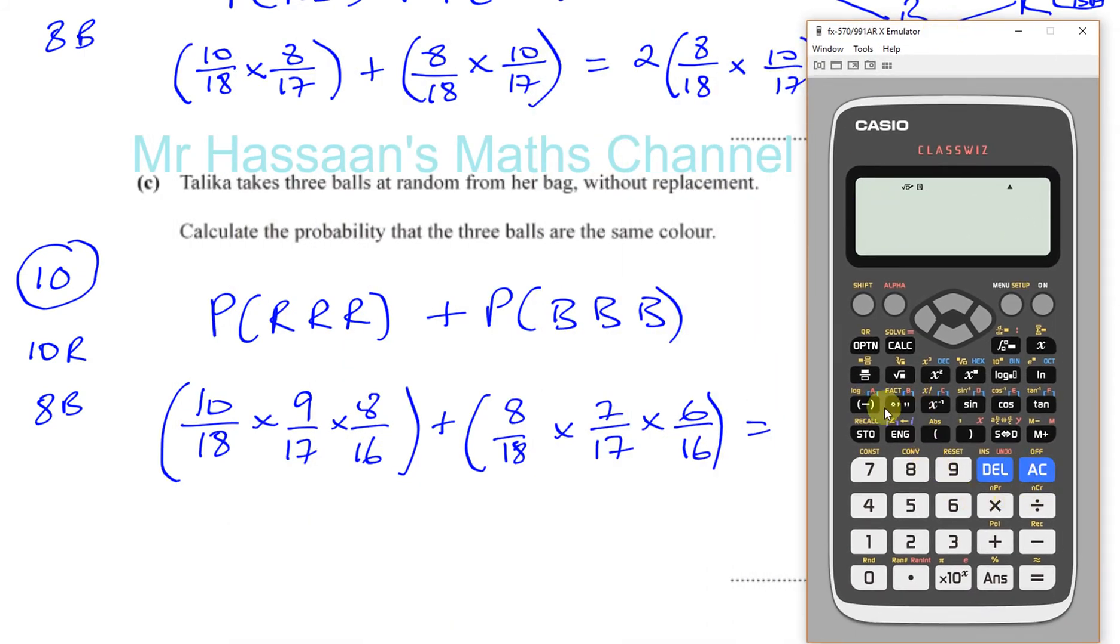So we have here 10 over 18 multiplied by 9 over 17 multiplied by 8 over 16. Close the bracket. And you've got plus, then you have 8 over 18 times 7 over 17 times 6 over 16. So it's just times here. You find the outcomes, you multiply. Be careful not to make silly mistakes like that.